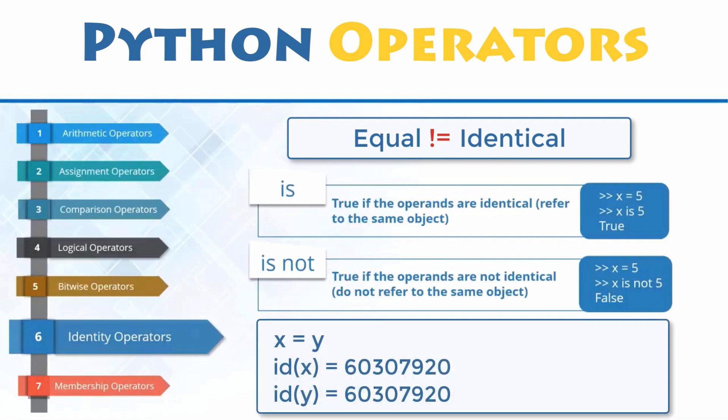You saw previously that when you make an assignment like X equals Y, Python merely creates a second reference to the same object, and you could confirm that fact with the id function. You can also confirm it using the is operator. Unsurprisingly, the opposite of is is is not.